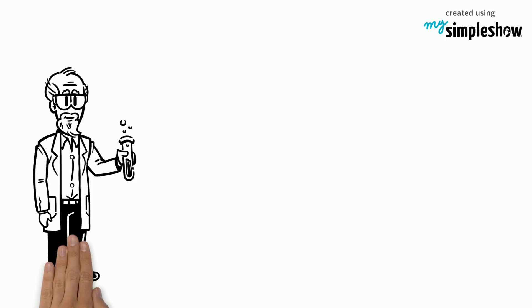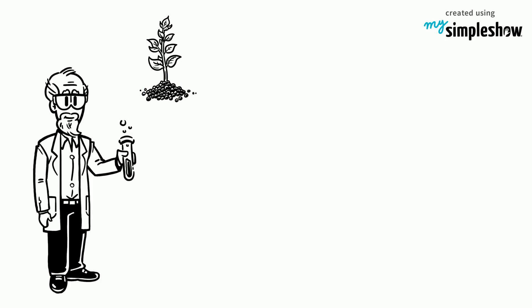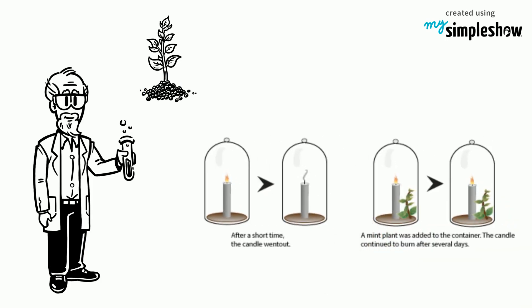In short, Joseph Priestley carried out an experiment that showed that plants produce oxygen. In his experiment, he put a plant in a closed container with a burning candle. Quickly the candle flame went out, using up all the oxygen.